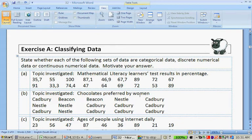Number 2. Chocolates preferred by women. Because we have different words here, it is categorical data.